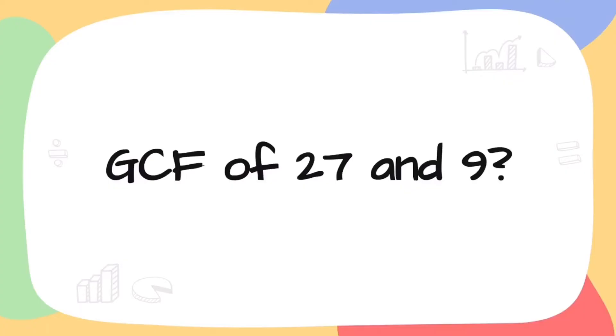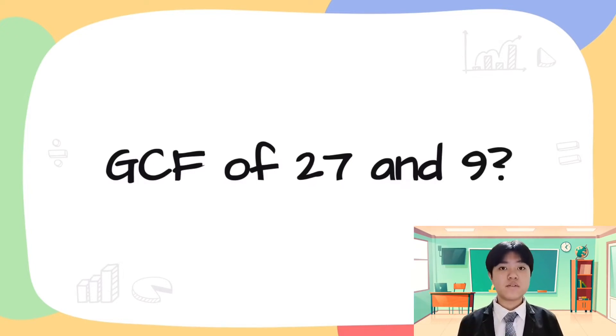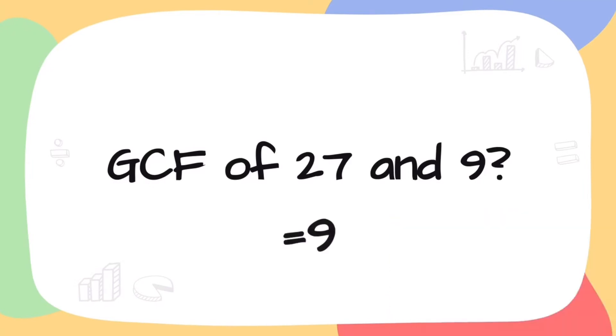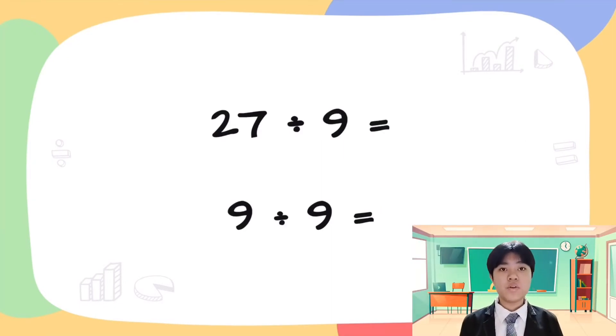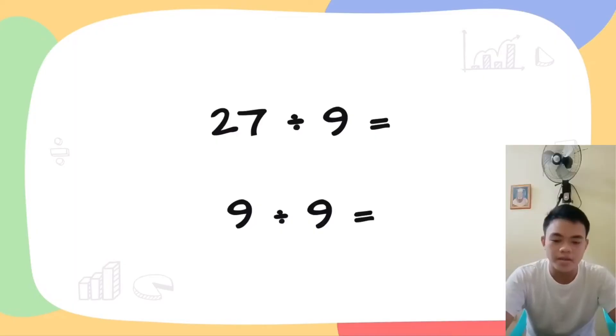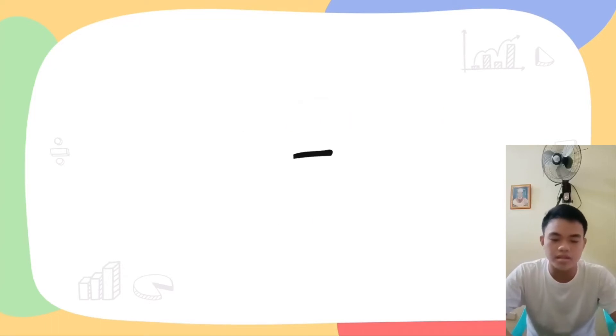Class, pens up, and we will see if we can already solve the ratio problem. In the problem, the given numbers are 27 and 9. Who can give me the greatest common factor of the two numbers? The GCF of 27 and 9 is 9. So Blessie, what is the next step that we are going to do? We will divide it like what we did in the first example. Correct, Denise and Blessie. So if we divide 27 and 9 by the GCF, what will be the answer? 27 divided by 9 is 3 and 9 divided by 9 is 1. Therefore, the answer to the question is 3 over 1.